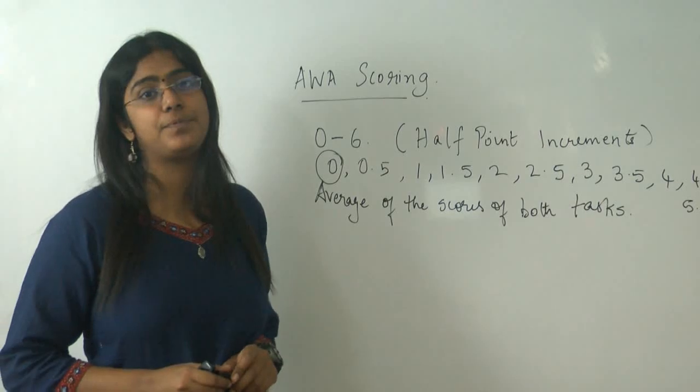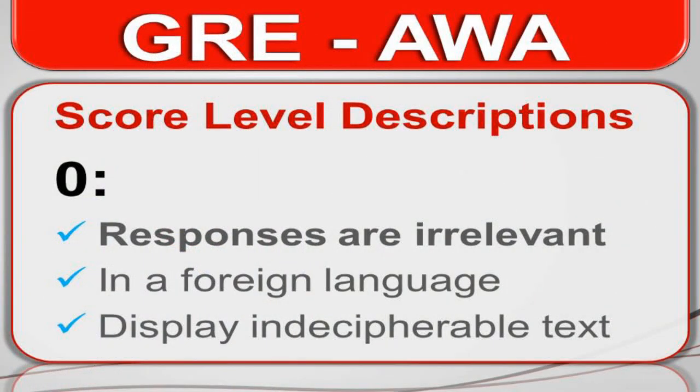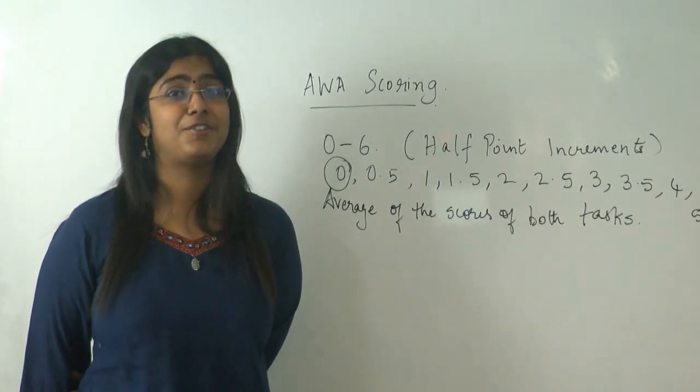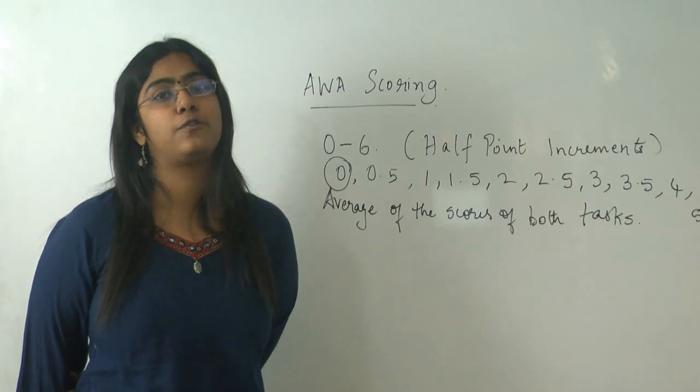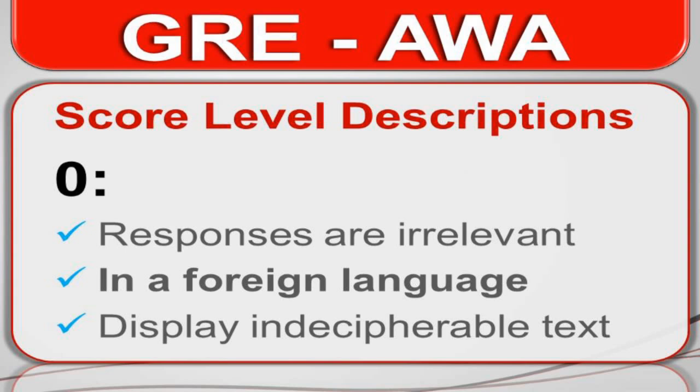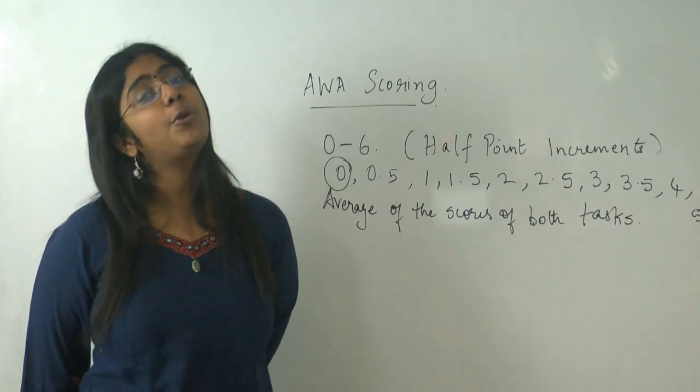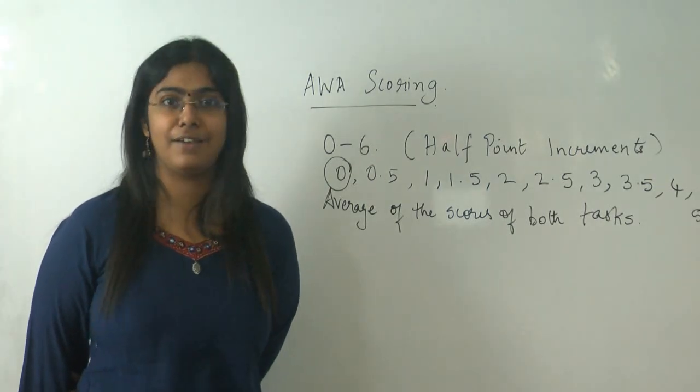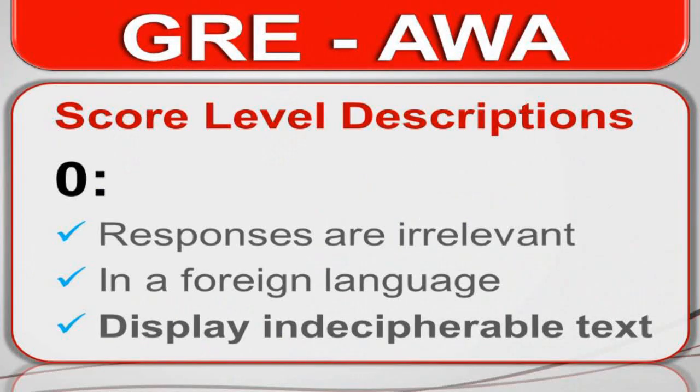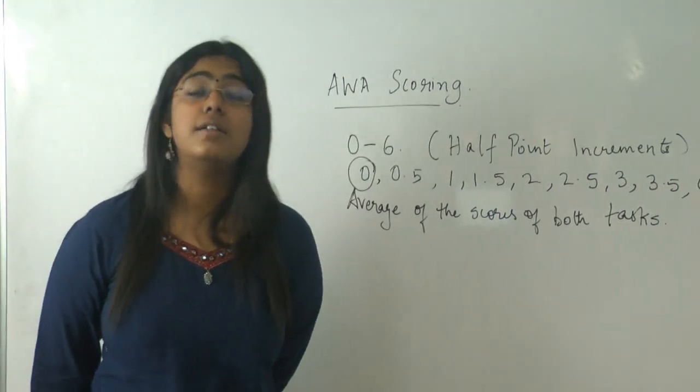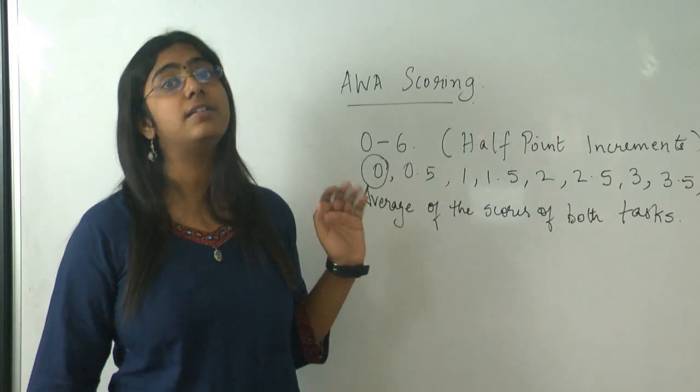And then comes 0. You get a 0 if your responses are irrelevant. Let's say you have written an excellent essay, but not for the given topic. You'll end up getting a 0 for that because the response is irrelevant. If you end up writing a response in German, French or any such language, again you get a 0. If you display indecipherable text, meaning something that is not understood by the professor, again you stand to get a 0.